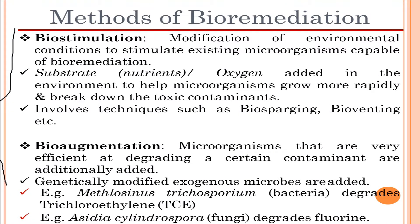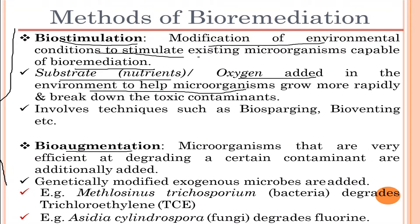Starting with biostimulation: biostimulation is the modification of environmental conditions to stimulate existing microorganisms capable of bioremediation. Substrate, nutrients, and oxygen are added to the environment to help microorganisms grow more rapidly and break down toxic contaminants. It involves techniques such as biosparging and bioventing — biosparging involves sparging air bubbles or oxygen, while bioventing provides additional nutrients or substrate to support microbial survival.